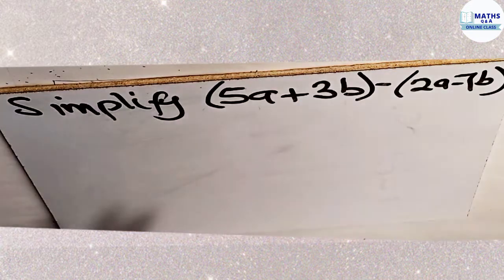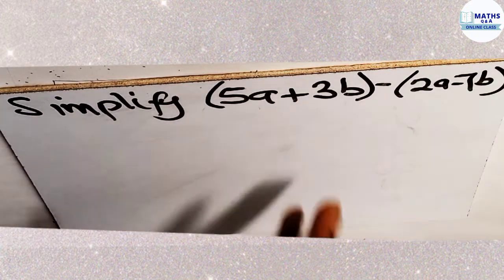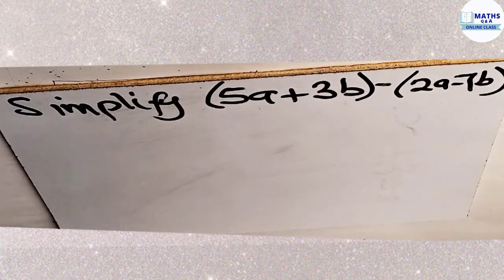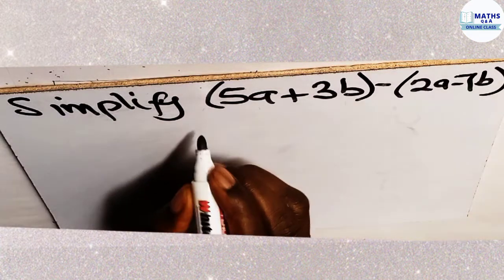Now the next thing that we have to know is that all these items in this bracket, they are not being multiplied by anything. So we write them separately. So let's solve.